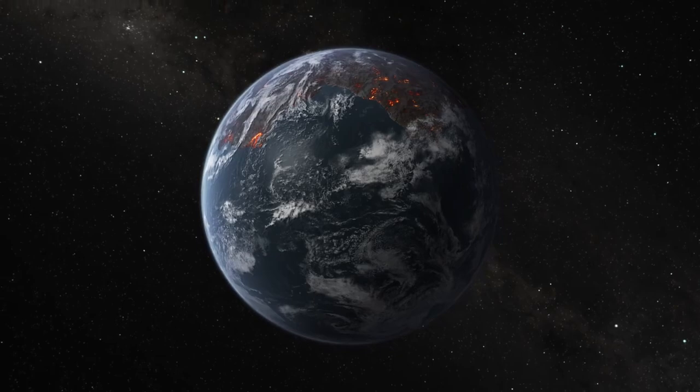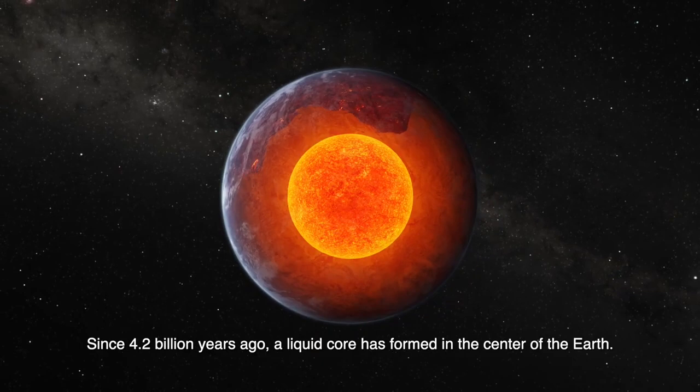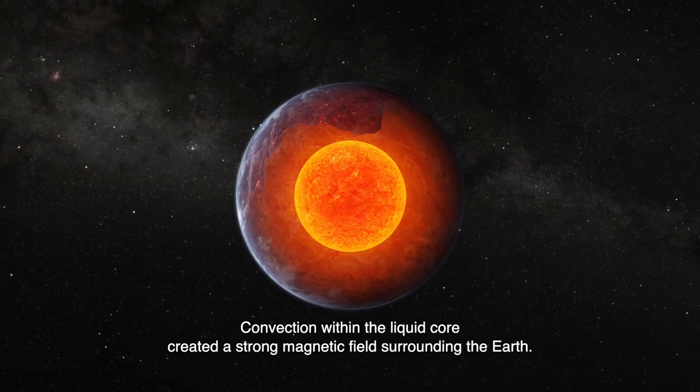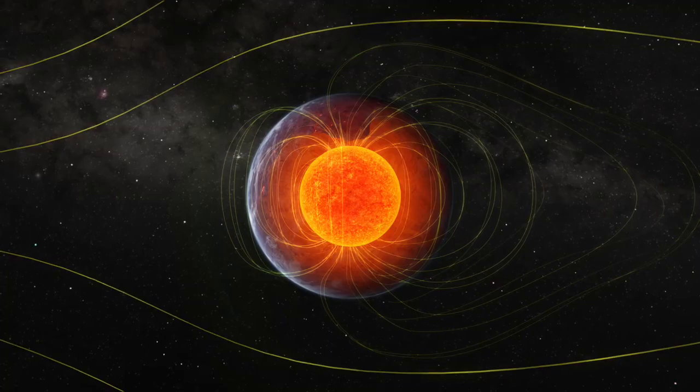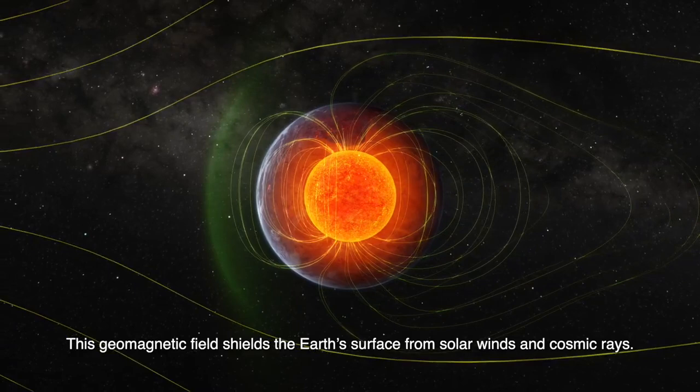Since 4.2 billion years ago, a liquid core has formed in the center of the Earth. Convection within the liquid core created a strong magnetic field surrounding the Earth. This geomagnetic field shields the Earth's surface from solar winds and cosmic rays.